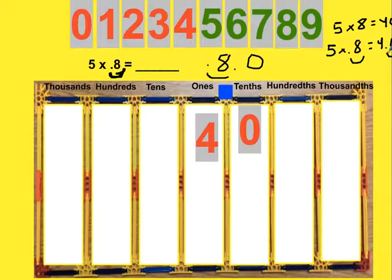If the factor is 10 times smaller, the product will be 10 times smaller. So the answer is, in fact, 4.0, or just 4, rather than 40.